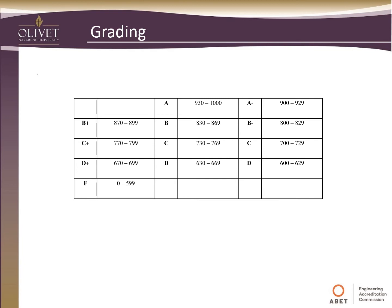The grading scale is straightforward with no rounding confusion and no extra credit. Wherever you fall determines your grade — for example, 869 points earns a B, while 870 earns a B+. It's simple and should eliminate any questions about grading.